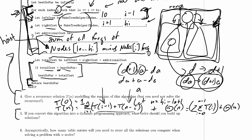If we convert this algorithm into a dynamic programming approach, what order should we build up solutions? So right now, we just have a plain old divide-and-conquer approach.